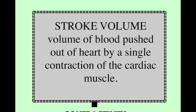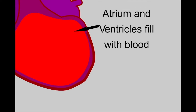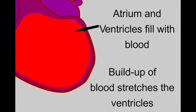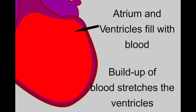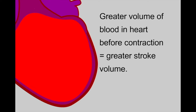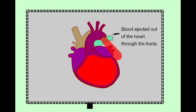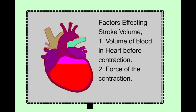A couple of things affect stroke volume. Between contractions, the chamber of the heart fills with blood. As the ventricles fill, the muscle is stretched in order to hold a greater volume — the amount the muscle stretches before contraction is known as preload. The more blood within the heart before contraction, the greater the stroke volume. The other thing that affects stroke volume is the force of contraction of the cardiac muscle; it is this contraction that forces blood out from the heart. The harder the muscle works, the greater the stroke volume.